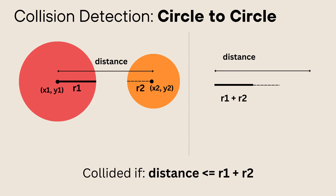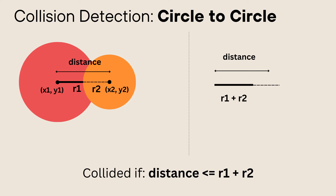Let's start with the first one, collision detection between two circles. If you look at two circles here, the three variables to pay attention to are the x and y coordinates of each circle, and the radius of each circle. They are colliding if the distance between the x and y coordinates of circle 1 and circle 2 is less than the radius of circle 1 plus circle 2. Because the distance is more than the combined radius, they're not colliding. But if the distance between the centers is less than the combined radii, they are colliding.